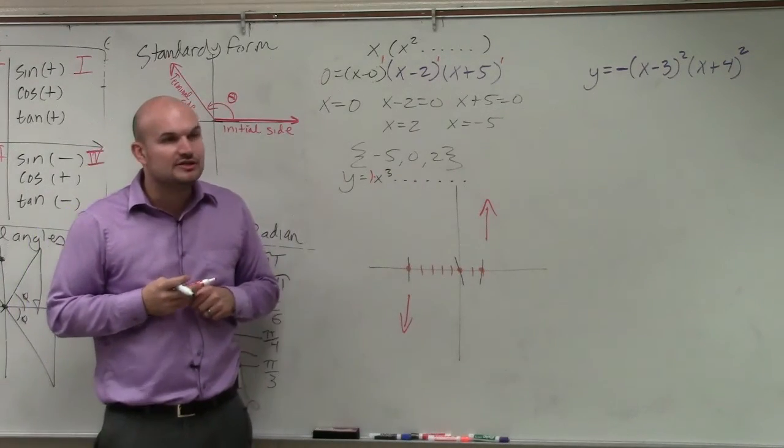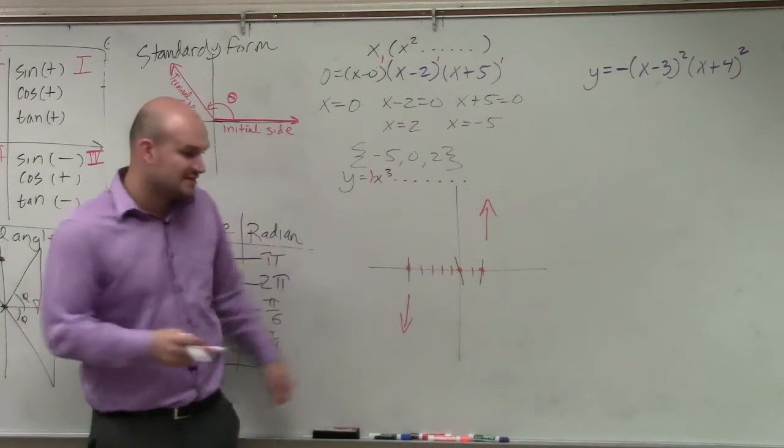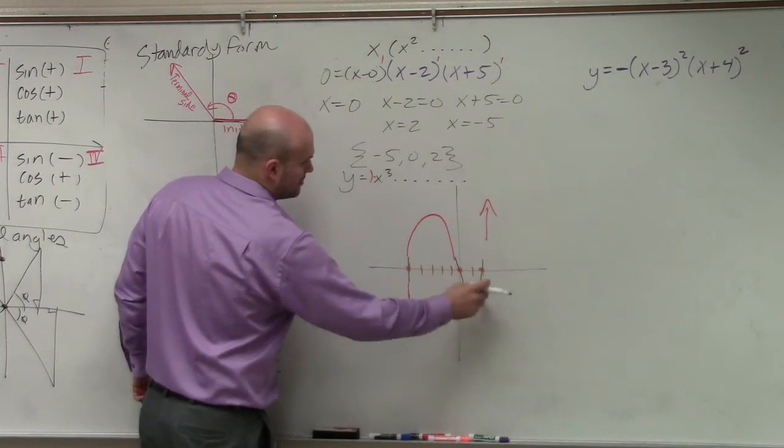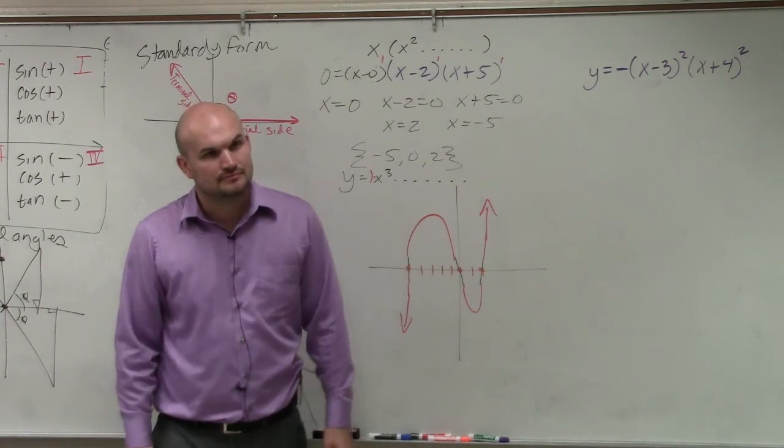And now, all you simply need to do is connect these two arrows by going through each of these zeros. Done. OK?